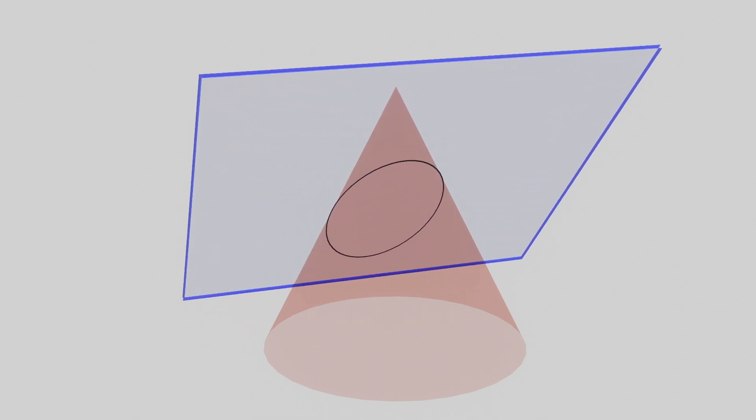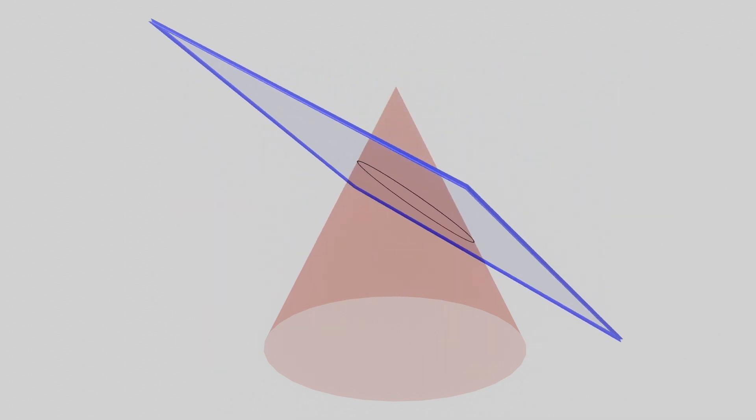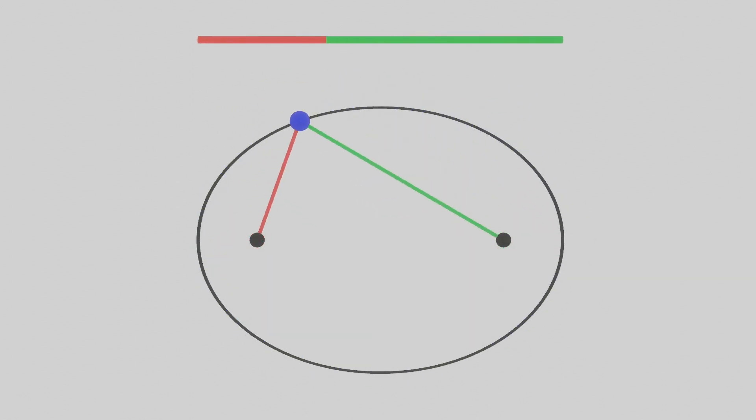Before we begin, let's start off by looking at some important properties that we will refer back to later. First, one of the defining features of an ellipse is that, given any point on it, the sum of distances from both the foci to that point always remains constant.